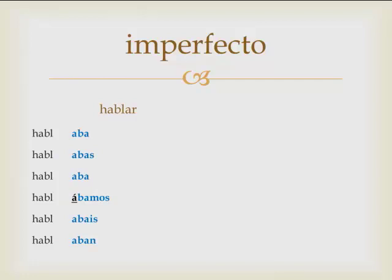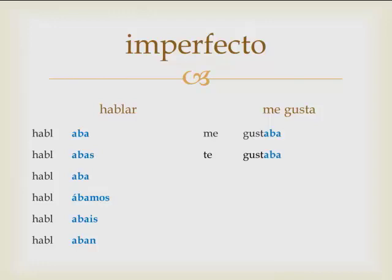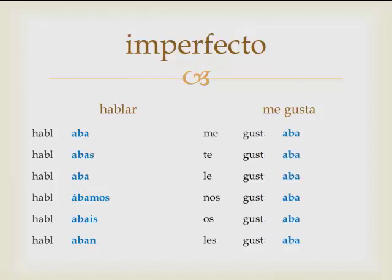Let's see what me gusta phrases look like in the past tense. Me gusta el libro becomes me gustaba el libro, and me gustan los libros becomes me gustaban los libros — 'I used to like the book' or 'I used to like the books.' The full list is: me gustaba, te gustaba, le gustaba, nos gustaba, os gustaba, and les gustaba — meaning I used to like, you used to like, she used to like, we used to like, y'all used to like, and they used to like. Add the n for multiple things: me gustaban.